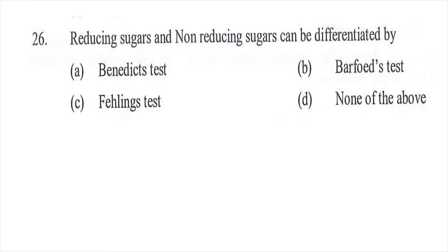Question twenty-six: Reducing sugars and non-reducing sugars can be differentiated by — option A Benedict's test, option B Barfoed's test, option C Fehling's test, or option D none of the above. The right answer is C, Fehling's test.